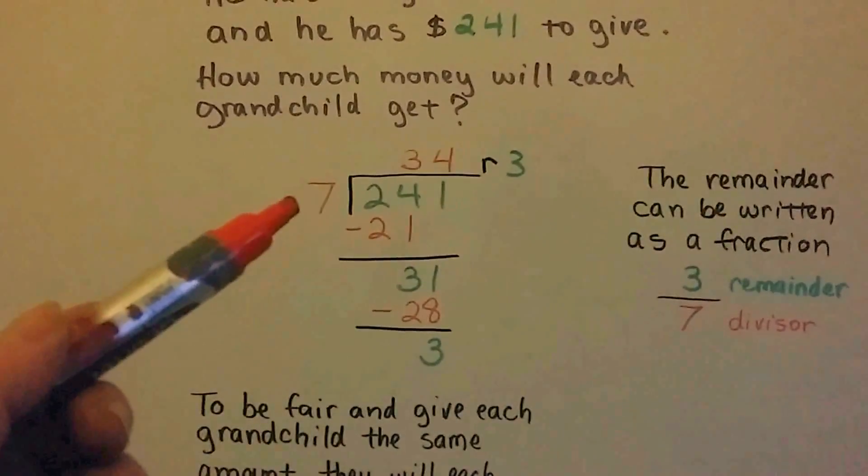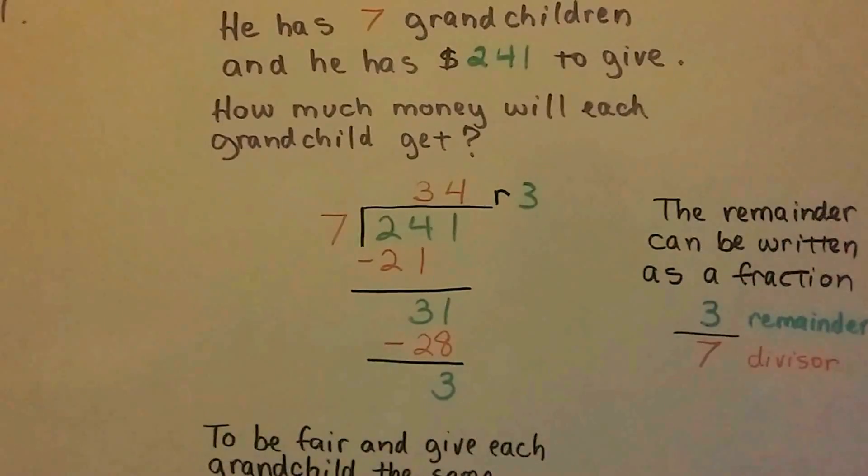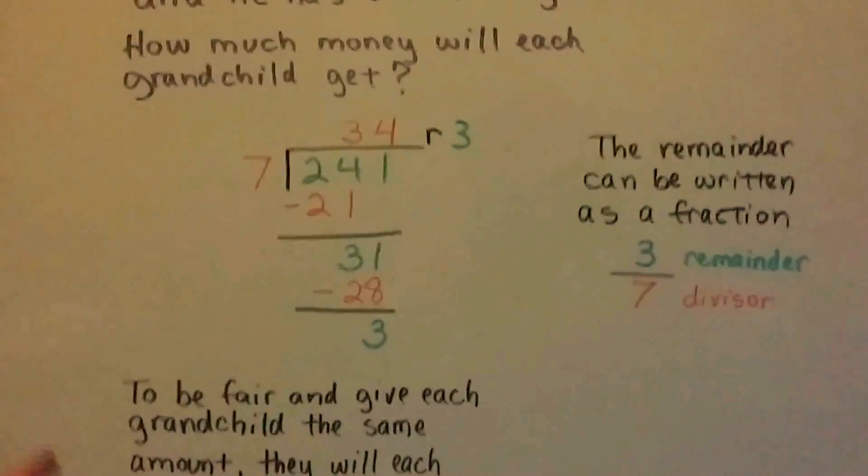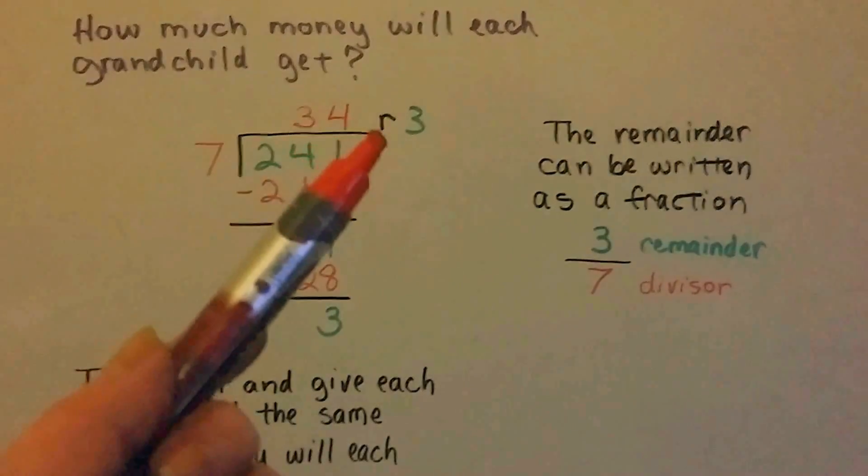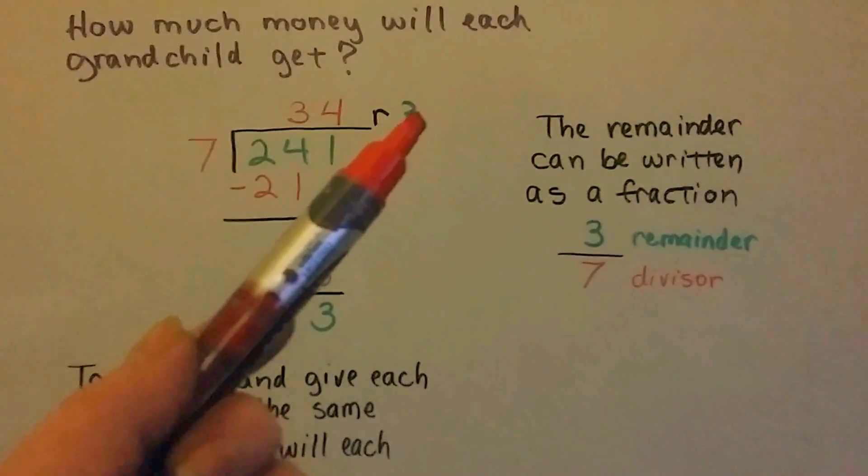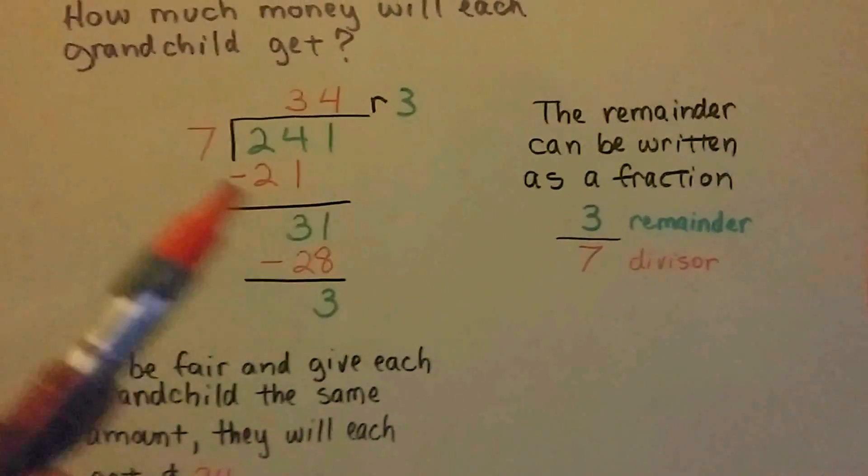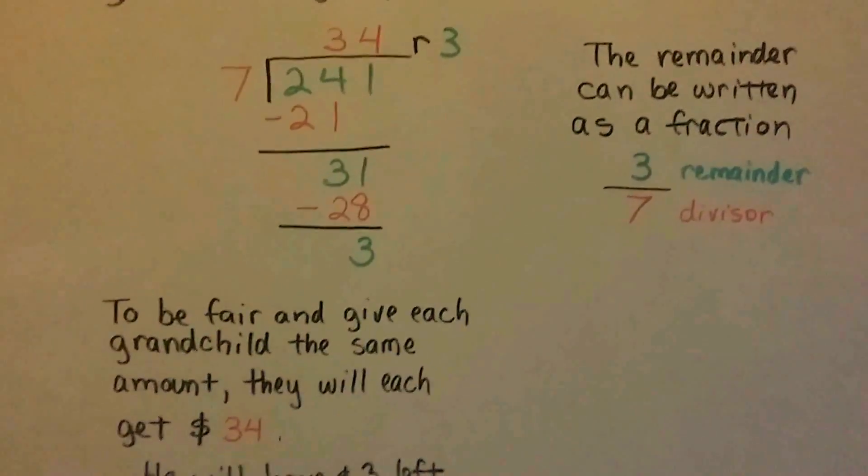Well, he's got 7 grandchildren. So he can hang on to that $3 and maybe put it towards another gift next year and let it save up and grow. The remainder can be written as a fraction. Did you know that? We've got 34 remainder 3. We can actually put the remainder as the numerator and this 7 divisor as the denominator.